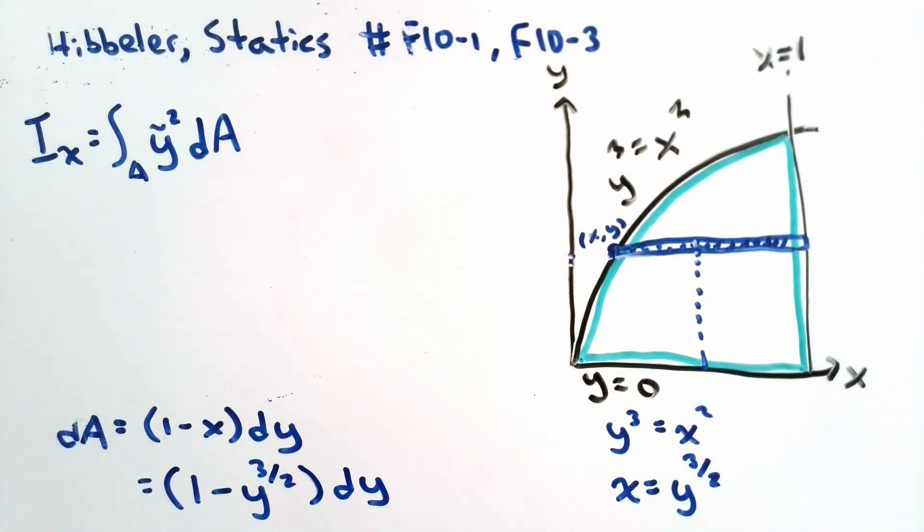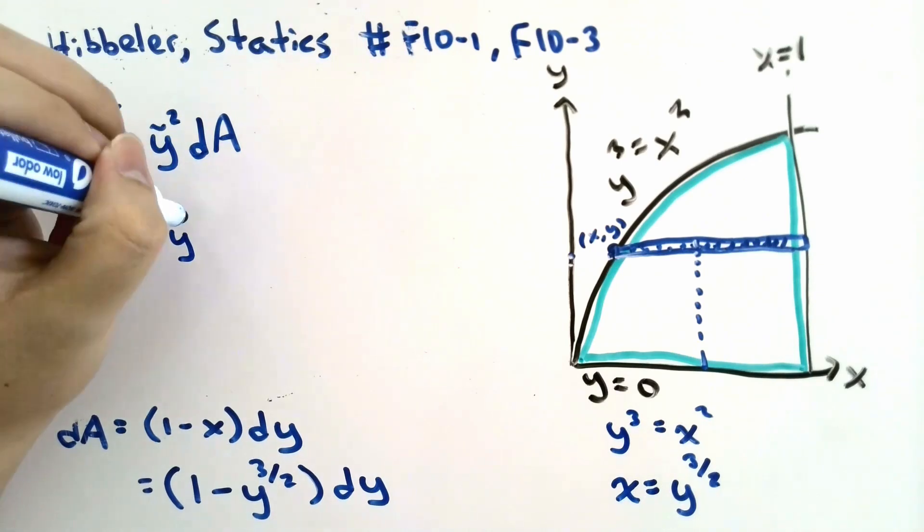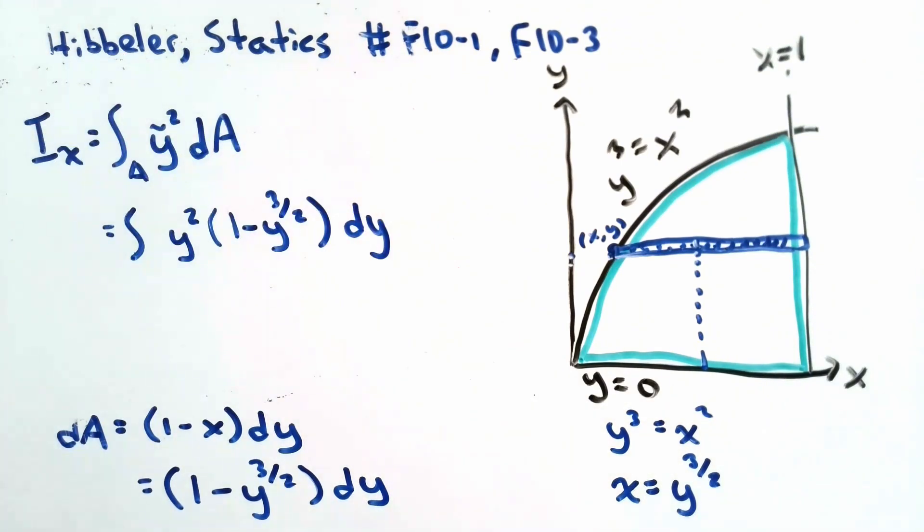Let's remember that the moment of inertia is equal to the integral of y squiggly squared evaluated over an area, dA. In this case, we've expressed our area in terms of y. We also know that y squiggly is equal to y, and we evaluate y from 0 to 1.